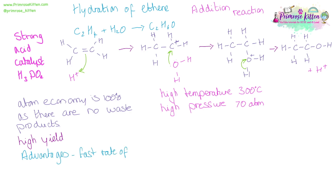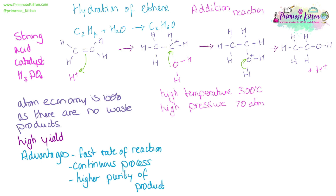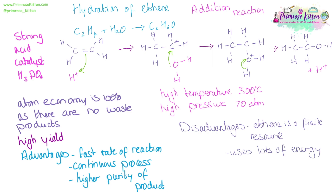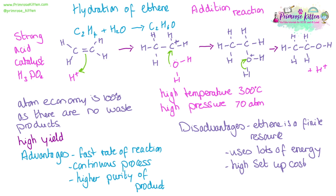The advantages are that it has a fast rate of reaction. It is a continuous process — ongoing, no stopping and starting. And the product at the end has a high degree of purity. The disadvantages are that ethene is a finite resource. It uses large amounts of energy, which is generally produced as electricity from fossil fuels. And it has a very high initial setup cost.